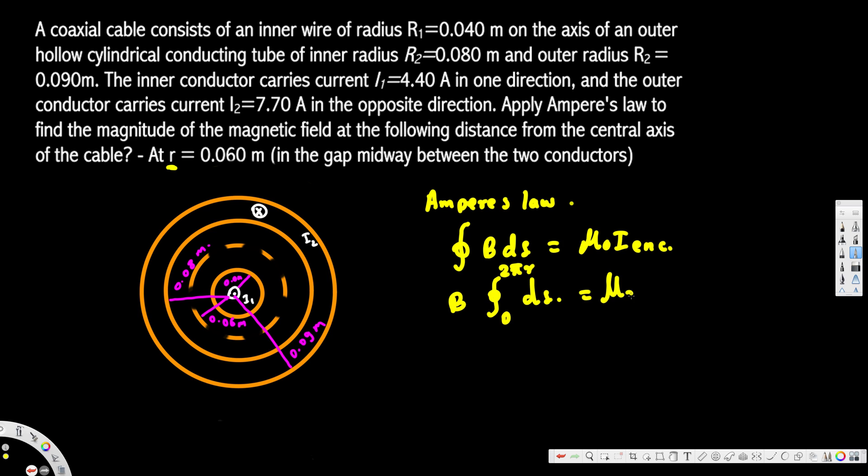That equals μ₀ I enclosed. In the region we're interested in, until 0.06 m, the only current enclosed is I₁. I₂ is outside this region, so we don't have to worry about it. I enclosed is just I₁.